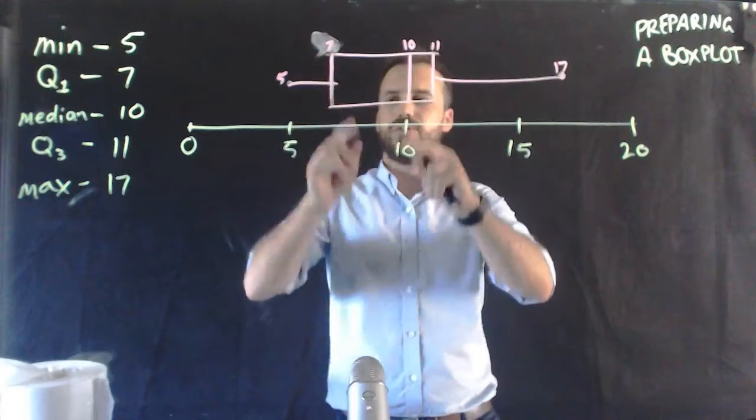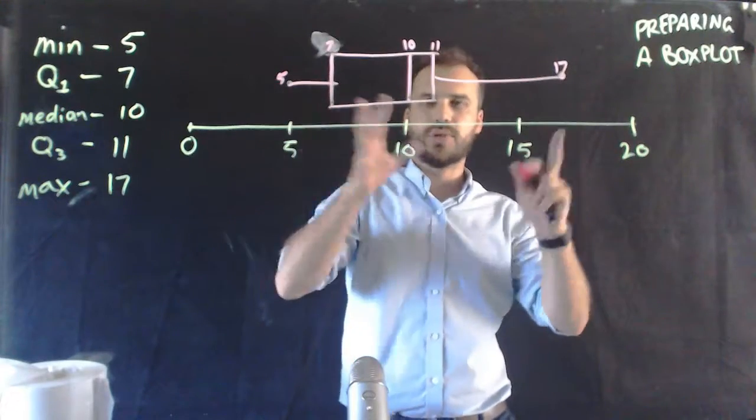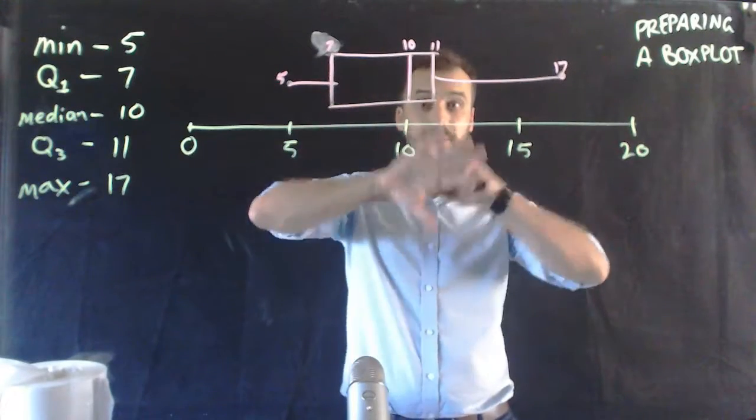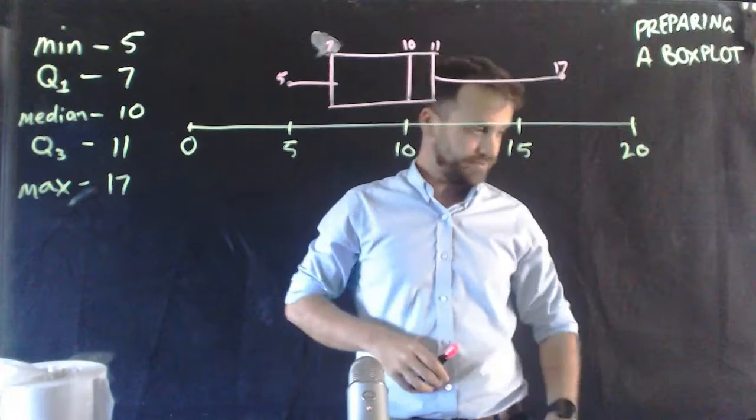The five number summary components are: median, Q1, Q3, minimum, and maximum. That's what box plots end up looking like — you can construct them however you want.